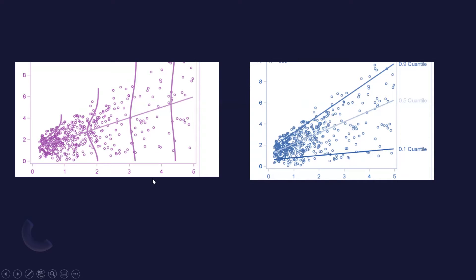Looking at these two graphs, the first figure shows a simple linear regression fit, which minimizes the sum of squared residuals. If we carefully look at this figure, we can see that there is more dispersion in the data when x increases. The traditional OLS method cannot address this dispersion.